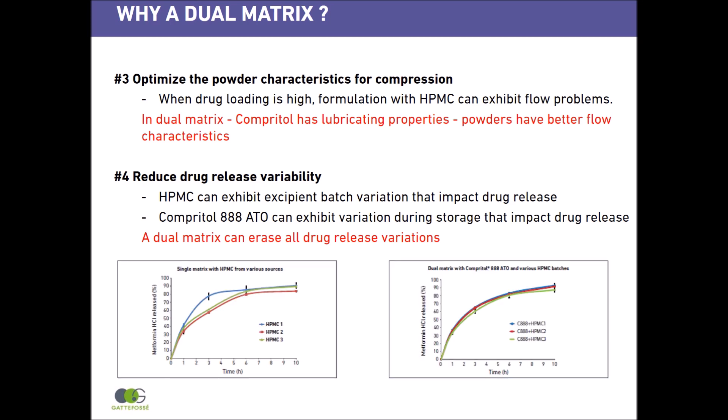This is an example. You can see here, firstly, a single matrix with HPMC from various sources — the drug release is different depending on the HPMC source. If we use the same HPMC but make a dual matrix with Compritol 888 ATO, then you see there is no more variation in the drug release.